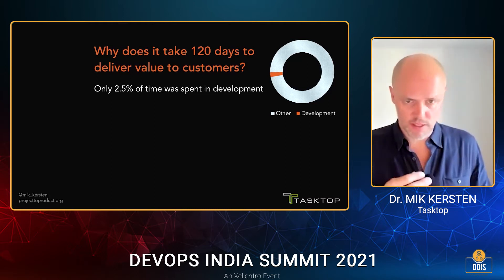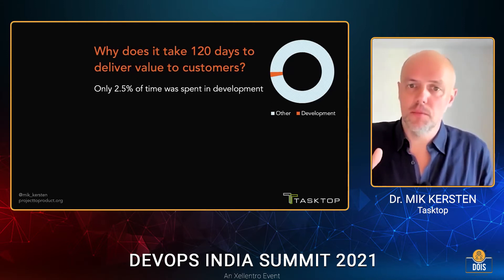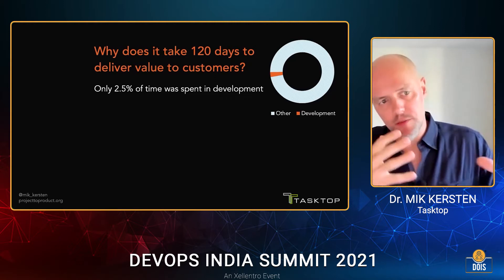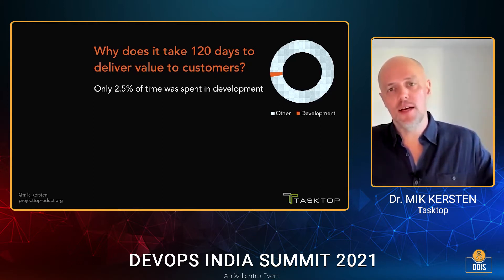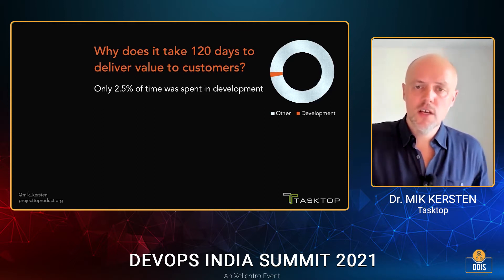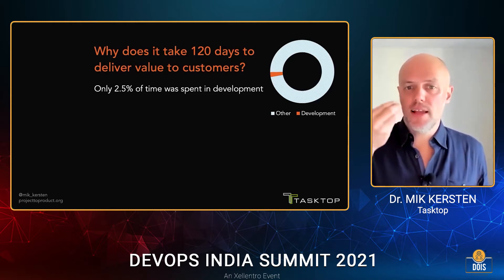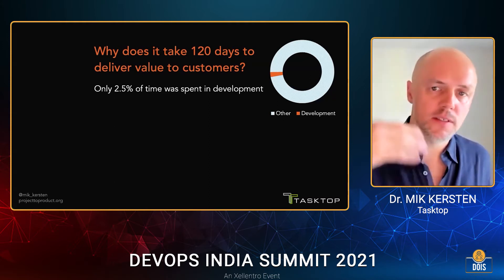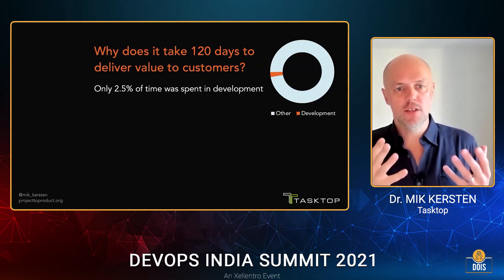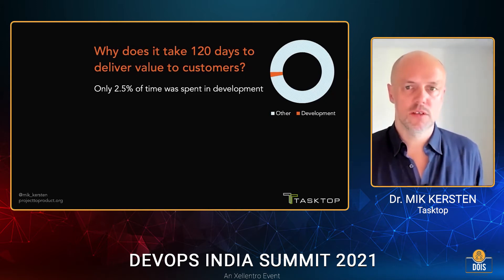Of course, they were different for different value streams. The key thing with bottlenecks is that at any particular point you really only have one — you relieve that one and then you find the other. But in this case, there were too few UX designers and too many approval processes happening. If you could overnight double the count of developers on this value stream, you would still have no more throughput because that's not where your constraint was.